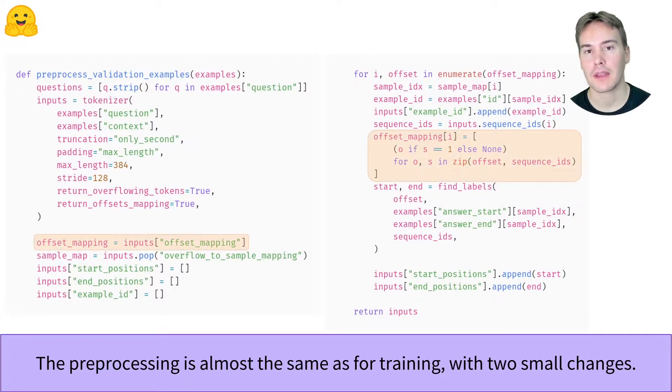Instead of discarding the offset mappings, we keep them and also include in them the information of where the context is, by setting the offsets of the special tokens and the question to none. Then we also keep track of the example ID for each feature, to be able to map back features to the examples that they originated from.